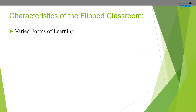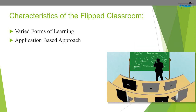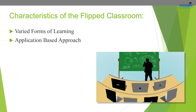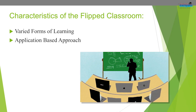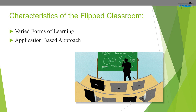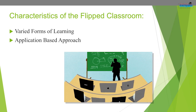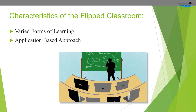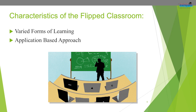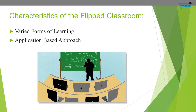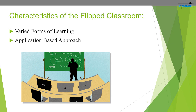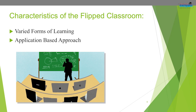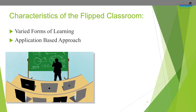The second characteristic is an application-based approach. Reverse to traditional teaching, the flipped classroom is based on an application-based approach in the form of activity-based learning. There are a variety of activities that take place in this application-oriented approach of learning. This learning is based on practical orientation.